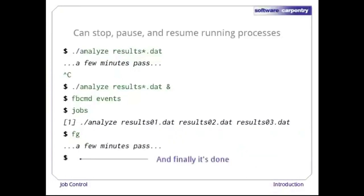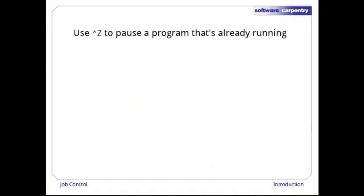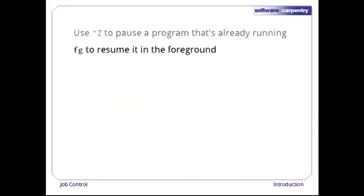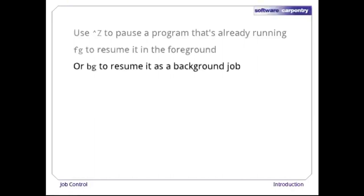Finally, when Analyze finishes running, the shell gives us a fresh prompt as usual. The shell gives us one more tool for job control. If a process is already running in the foreground, Ctrl-Z will pause it and return control to the shell. We can then use fg to resume it in the foreground or bg to resume it as a background job.